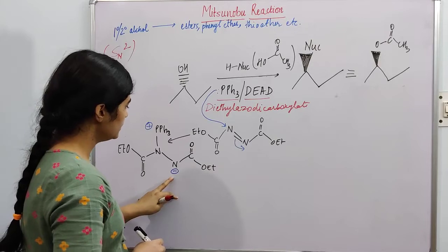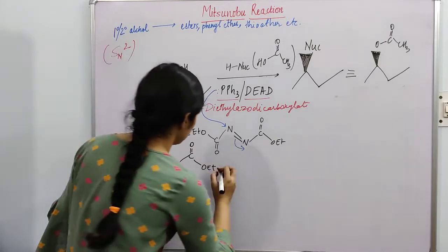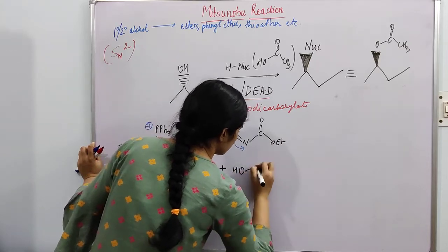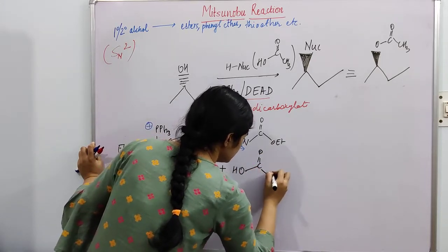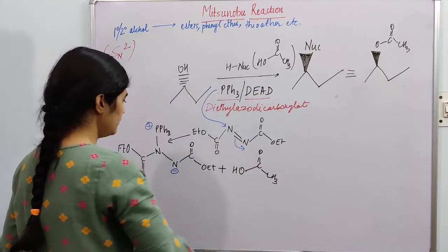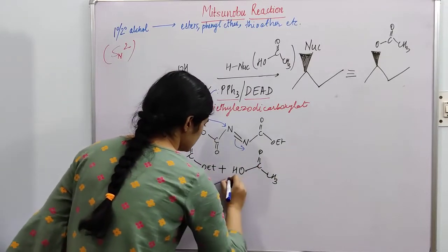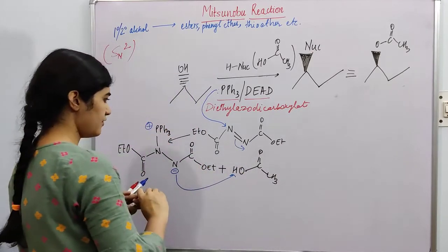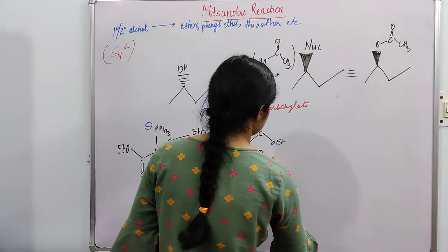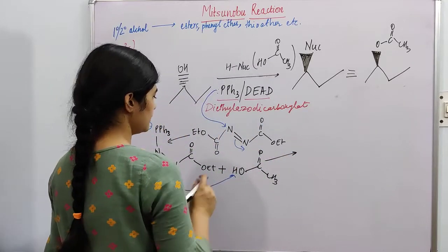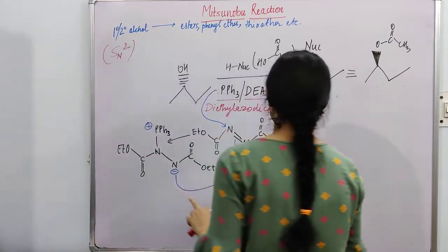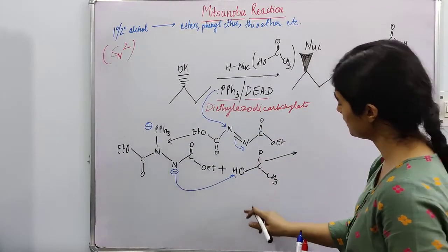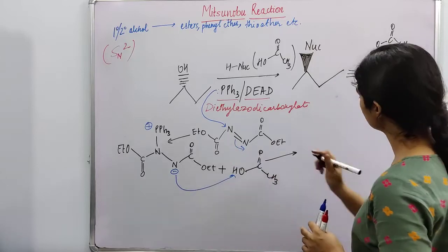So what happens, this is your acetic acid, and this lone pair with negative charge removes the proton, and you will have acetate ion. This will form acetate ion, this will be eliminated as acetate ion.